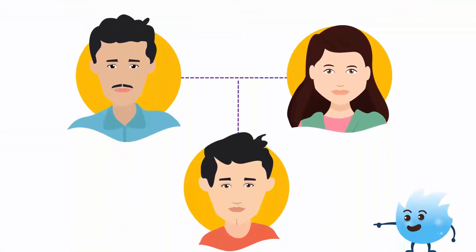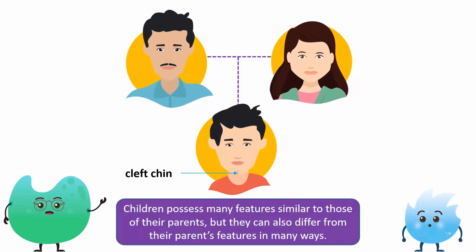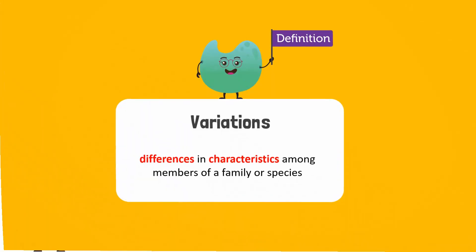But if this is the case, how come Asif has a cleft chin? His parents don't have a cleft chin. Children possess many features similar to those of their parents, but they can also differ from their parents' features in many ways. Differences in characteristics among members of a family or species are called variations.